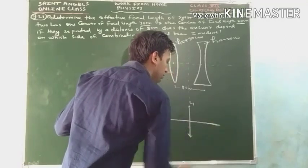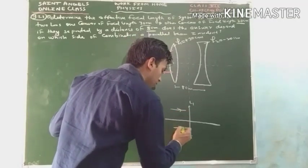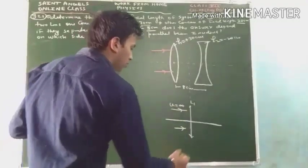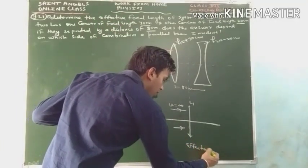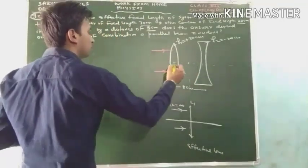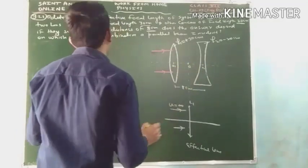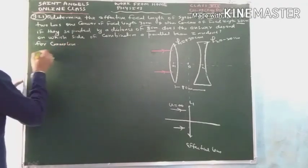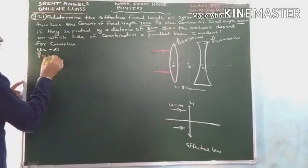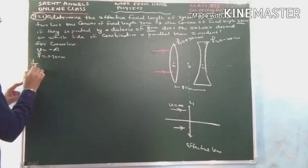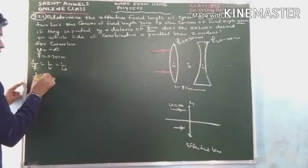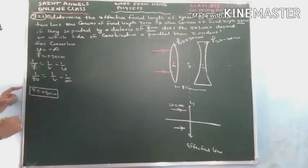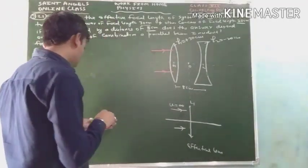For the effective lens, the position of the object remains identical to that for the combination, so u equals negative infinity. For the convex lens: u = −∞, f = +30 cm. Applying the lens formula, 1/f = 1/v − 1/u gives 1/30 = 1/v − 1/(−∞), hence v = +30 cm. This means the image of the parallel beam formed by the convex lens is at a distance of 30 cm.